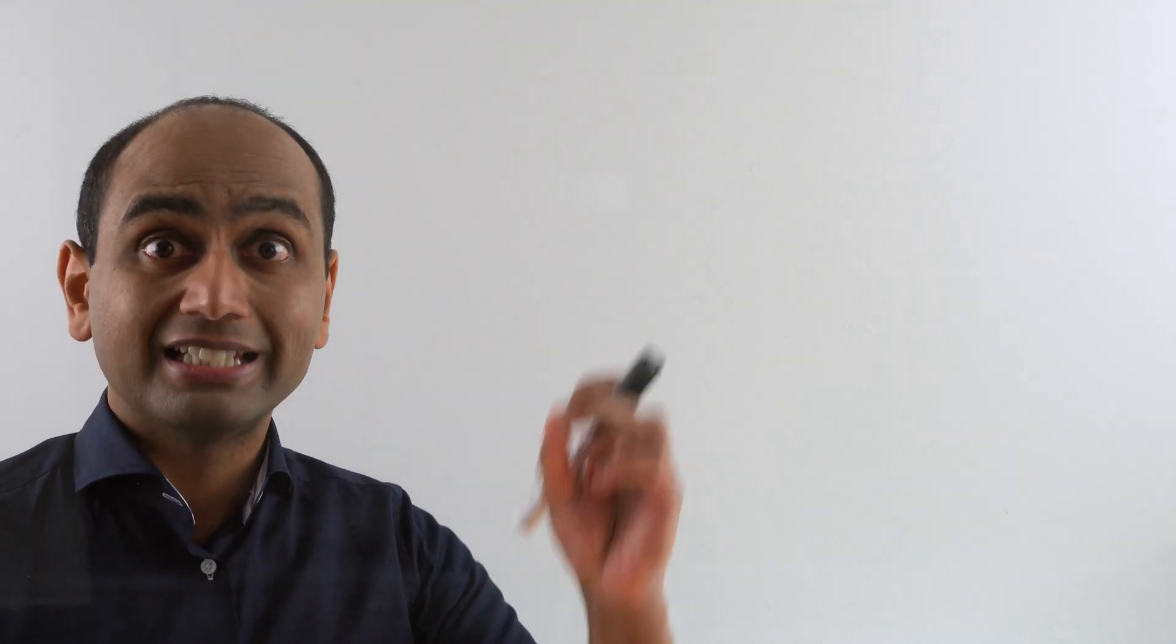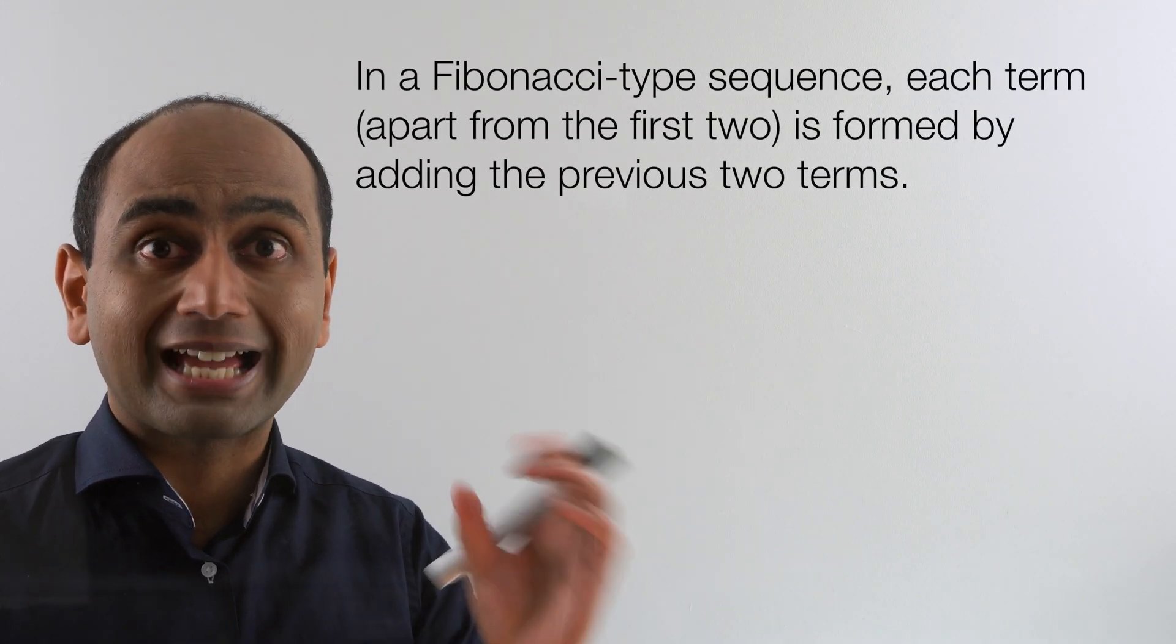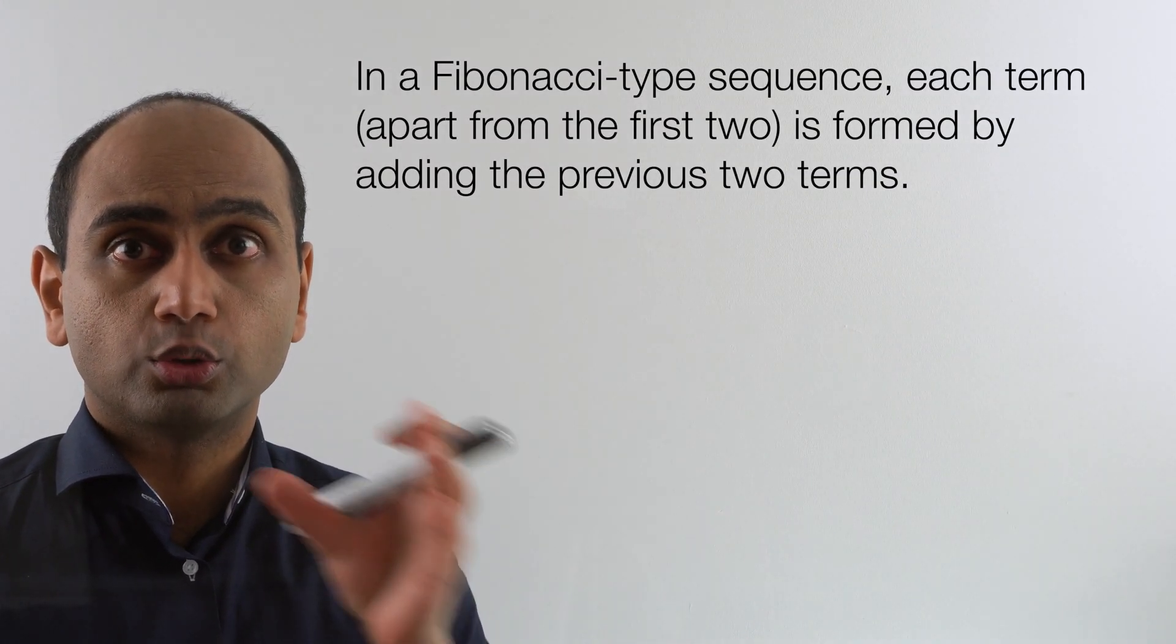In this video we're going to be looking at Fibonacci type sequences. In a Fibonacci sequence, you have two initial terms and then each subsequent term is formed by adding the previous two terms.